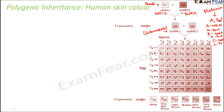A cross between two pure-breeding parents does not produce the dominant trait of one parent. Instead it produces an intermediate trait in the F1 generation. All the dominant alleles A, B, and C each make their own contribution, giving rise to a new, intermediate skin color altogether.